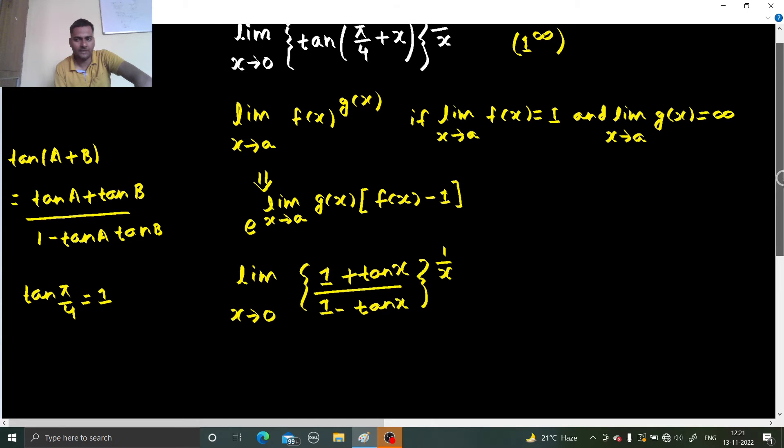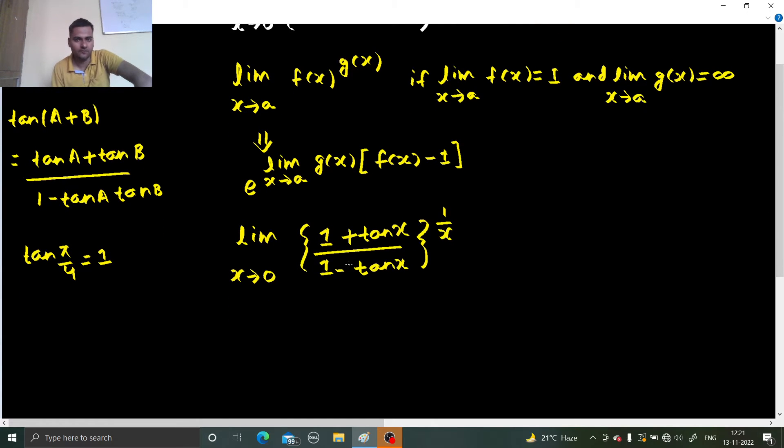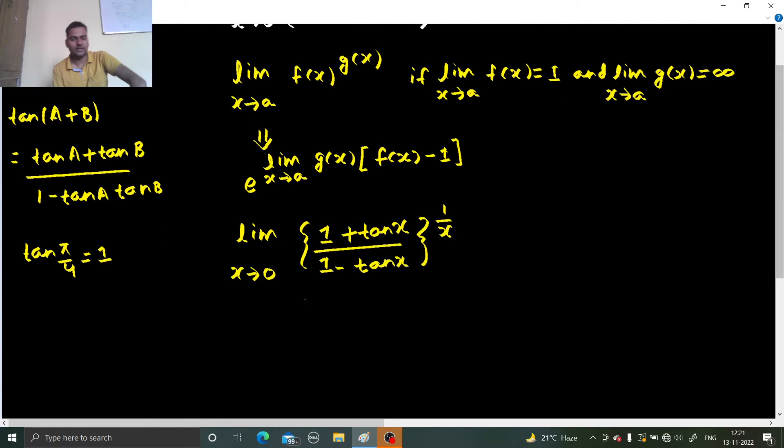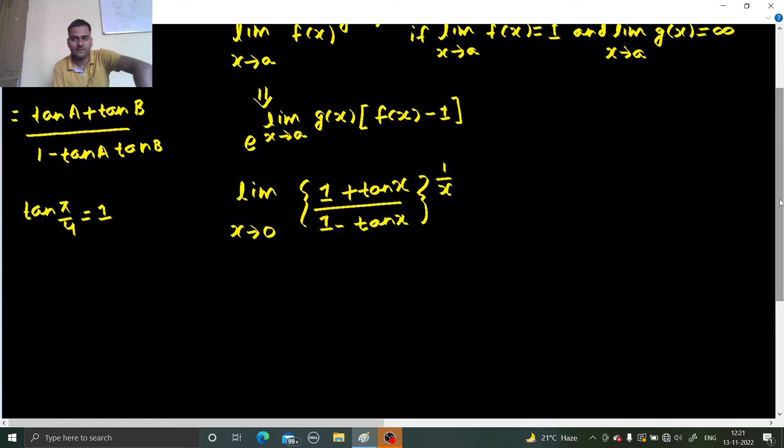Now this is 1 power infinity form because if you put 0 here, you will get (1 + 0)/(1 - 0), so 1 by 1 is 1 and power infinity. So how we solve, we write this as e power limit x tending to 0: